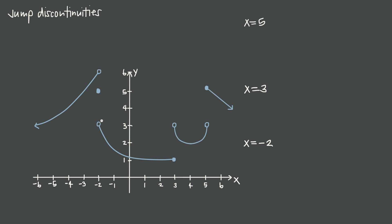Since the general limit never exists at a jump discontinuity, really all we're interested in is: what is the left-hand limit, what is the right-hand limit, and what is the value of the function at the jump discontinuity. Those three values — left-hand limit, right-hand limit, and the value of the function itself — can all have different values at the jump discontinuity, and the general limit will never exist.